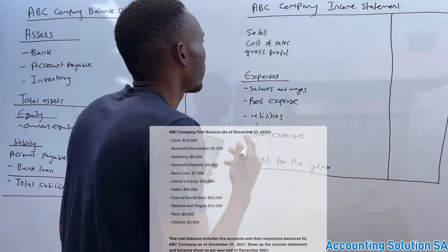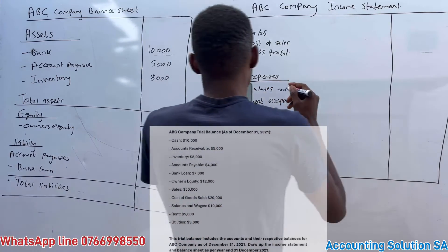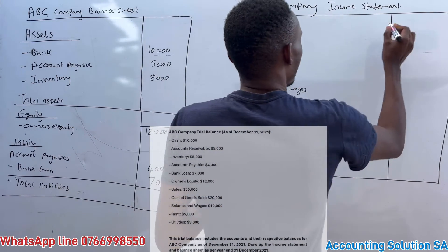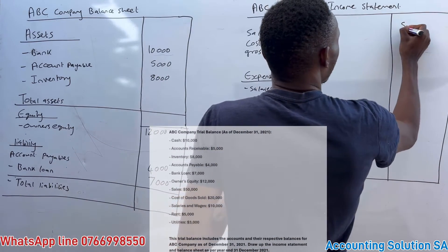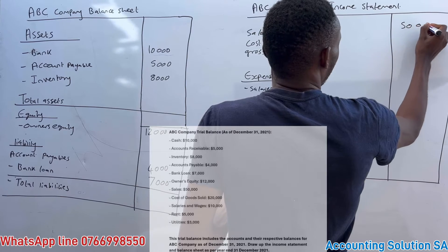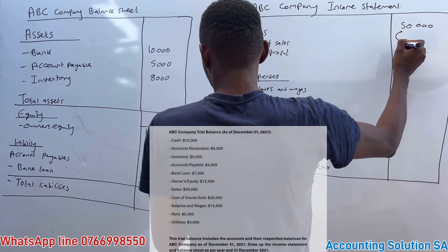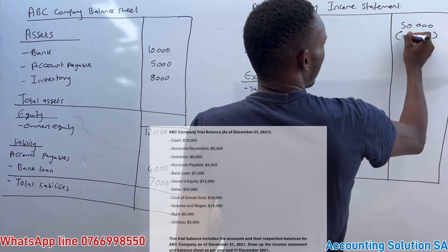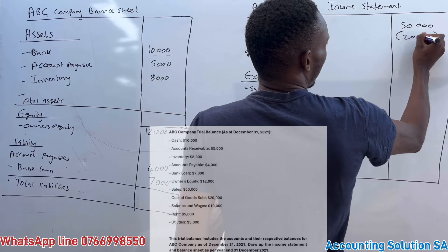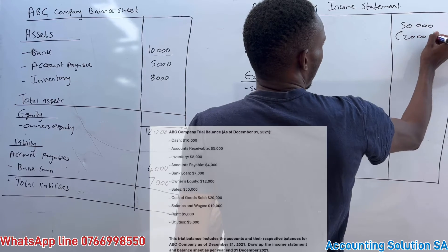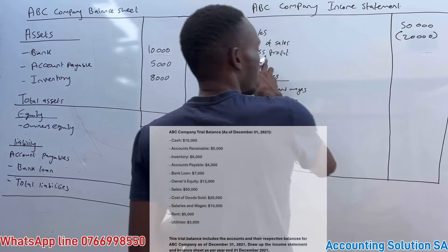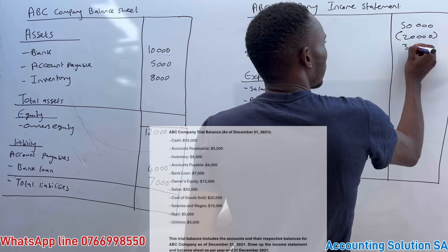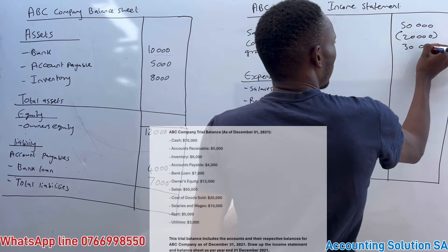Sales form part of the income statement, so we record our sales amount of 50,000. The cost of sales is 20,000, which we subtract to get a gross profit of 30,000.